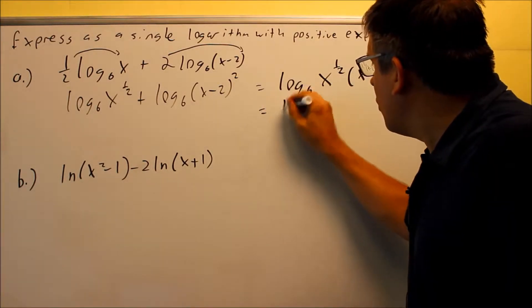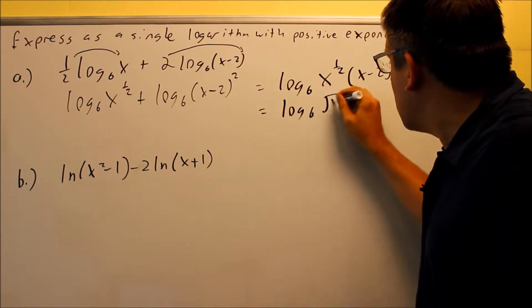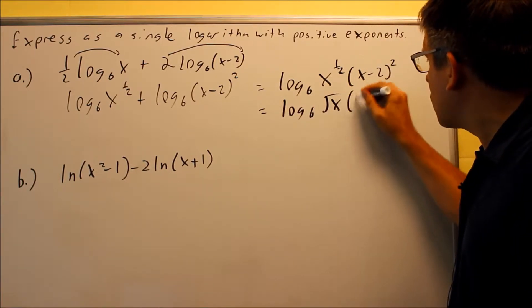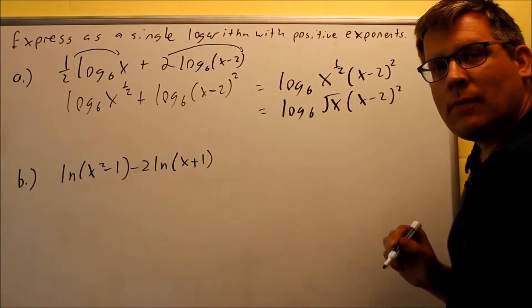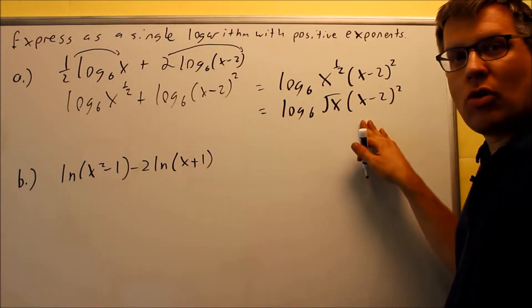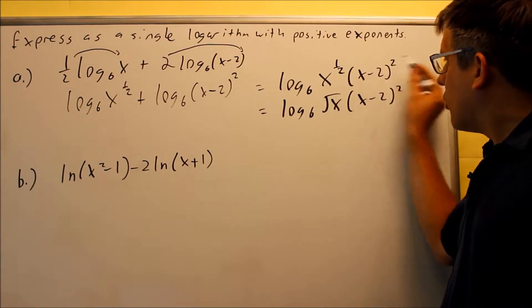This would be a single log, you could leave your answer like that, or if you wanted to, you could also change that square, the 1 half back into a square root, and you could write your answer like this. So either one of these would be considered correct. It's a single logarithm, the powers on here, they're both positive.